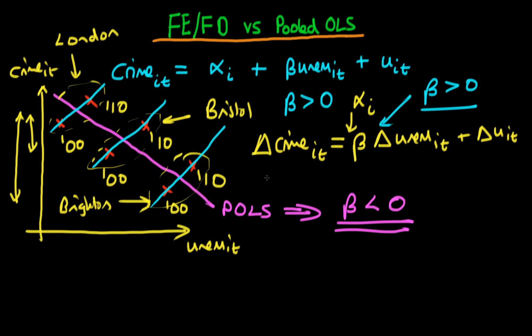Hence beta on average across the three cities is greater than zero, and we correctly conclude that increases in unemployment tend to be associated with increases in the crime rate. That's the first differences case. The fixed effects case is a little more complicated because the regression is slightly more involved, though not much.